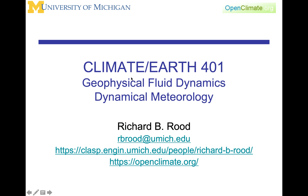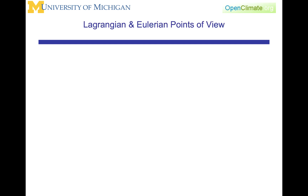This lecture in Climate and Earth 401 is on the Lagrangian and Eulerian points of view. We've spent a lot of time in the course already thinking about the point of view of the observer or of the person doing research or taking this course, and we've spent a lot of time on the coordinate system, the tangential coordinate system, rotating coordinate systems. We're now going to talk about another point of view, the Lagrangian and the Eulerian points of view.